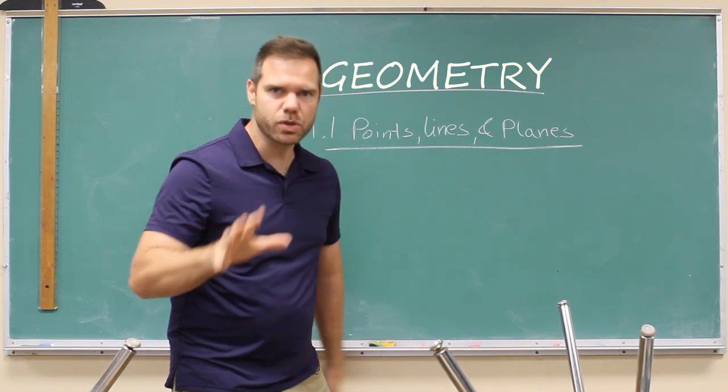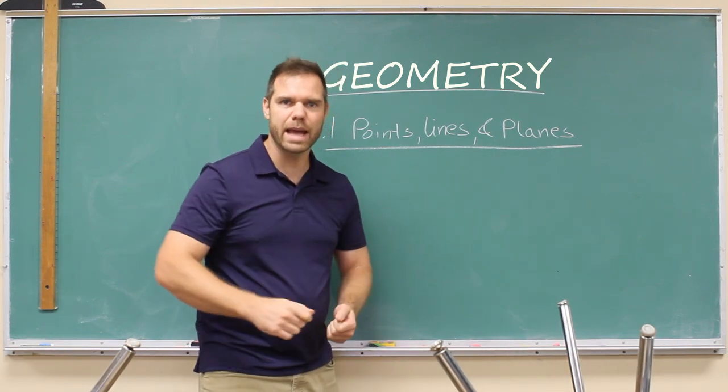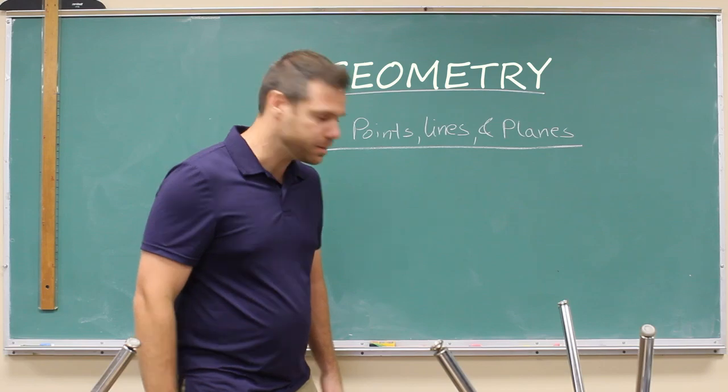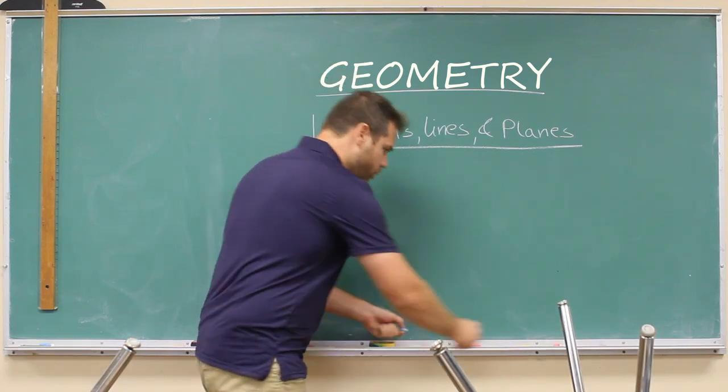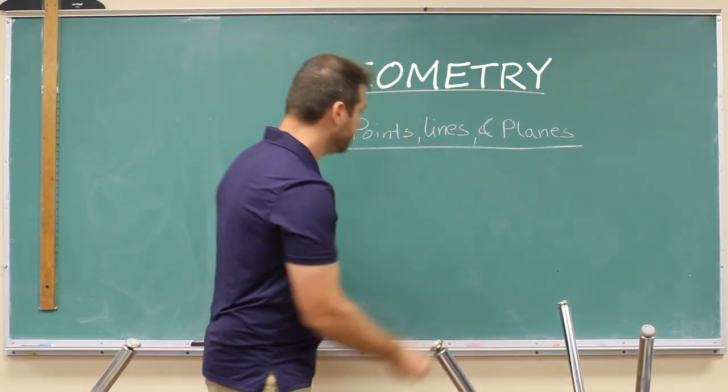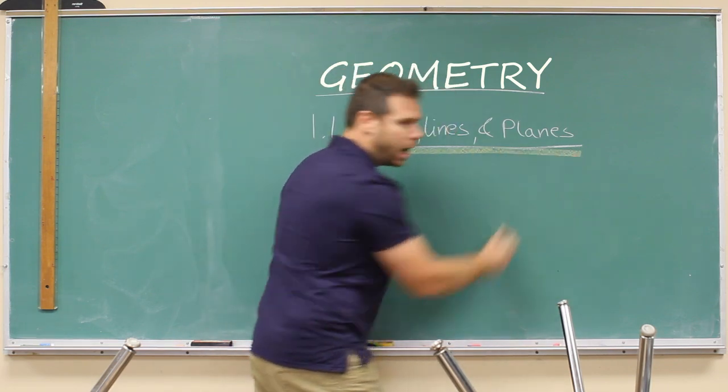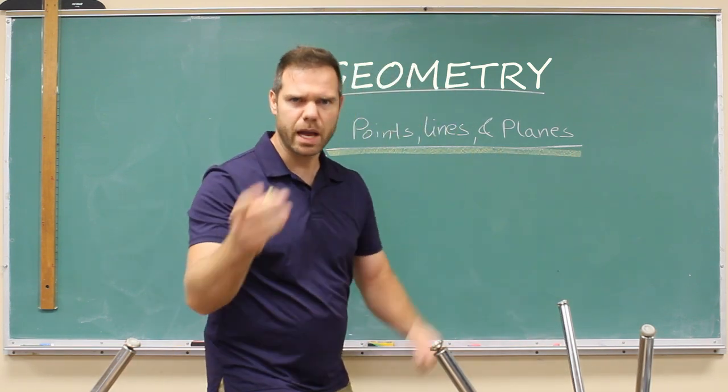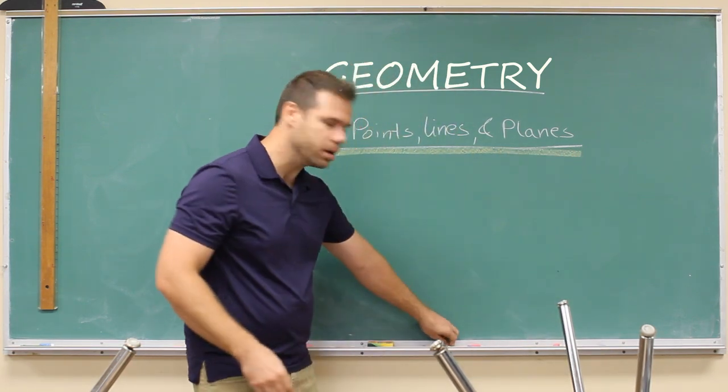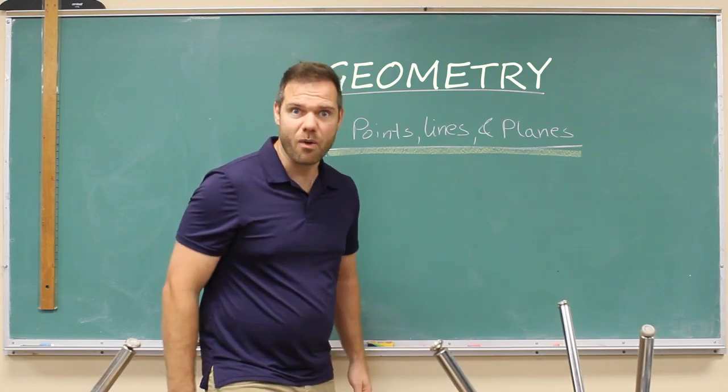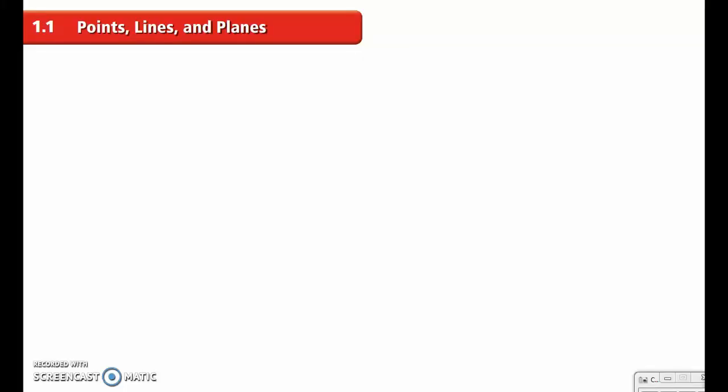Any text we have in the screencast, go ahead and write that down. I like for you to use a lot of colors, so if you have colors, that's great. If you don't, if you have a highlighter, highlight, underline. That helps you learn this a little bit better. So let's go. Alright, so section 1.1, points, lines, and planes.